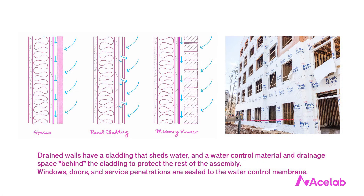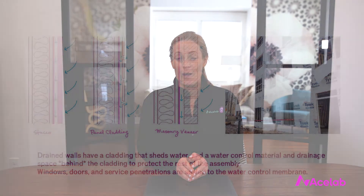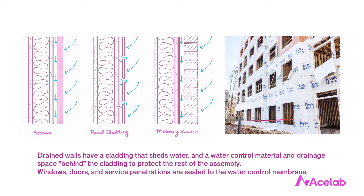Many of the most popular building materials just don't lend themselves to perfectly blocking water throughout the entire service life of the building. The third approach is WRB and drainage. Drained walls have a cladding that sheds water and a water control material and drainage space behind the cladding to protect the rest of the assembly. The building code calls the water control membrane a WRB, or water resistive barrier, and we seal windows, doors, and service penetrations to that membrane.